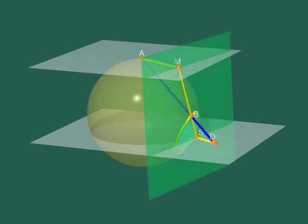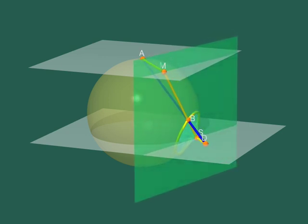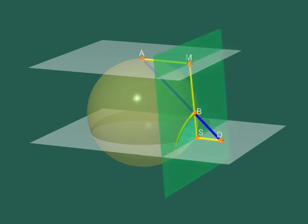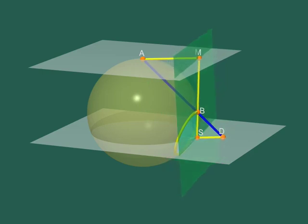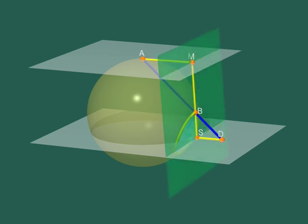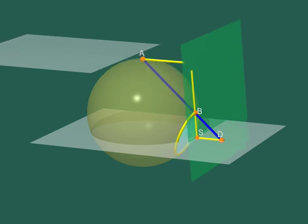When B moves along the yellow circle, the segment BS keeps tangent to the sphere. Its length is therefore constant. Since BS and DS have the same length, the moving segment DS also retains a constant length.